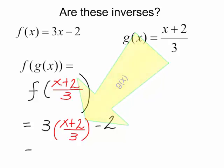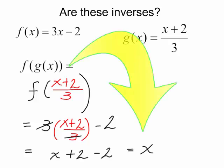Let's do a little algebra. The 3s will cancel out. I will have x plus 2 minus 2. f of g of x is equal to x. Now we need to find g of f of x.